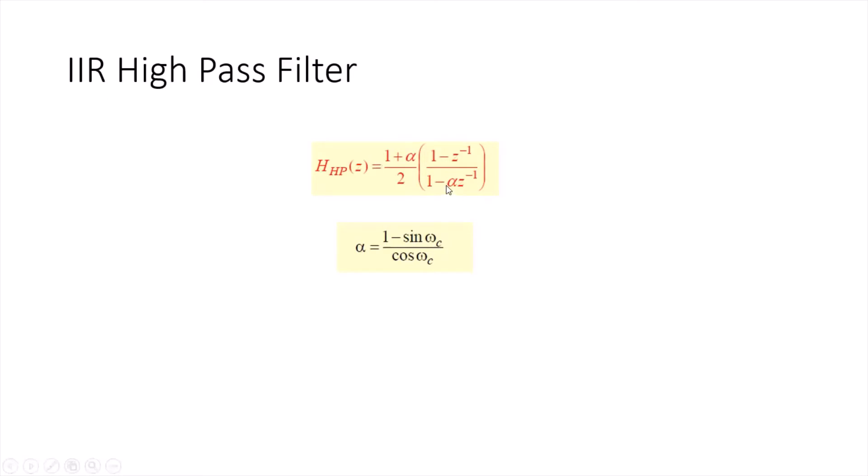IIR gives you flexibility to change the pole location to control the cutoff frequency. Alpha is the position of the pole. By changing the position of the pole, we can change the cutoff frequency. We can calculate the value of alpha using this formula. But you should keep in mind alpha should be less than one to maintain the stability condition. If the alpha value is greater than one, it means your system is unstable. So you need to keep alpha less than one. Now let's go to MATLAB and implement it.